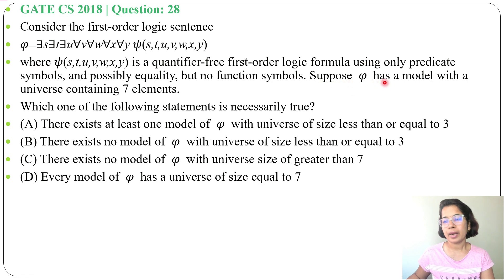Suppose φ has a model with a universe containing 7 elements. Which one of the following statements is necessarily true? Four options with four statements are given.